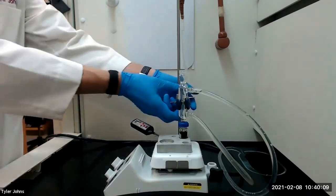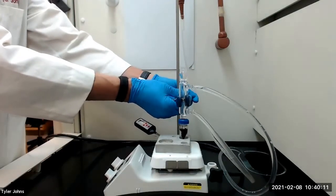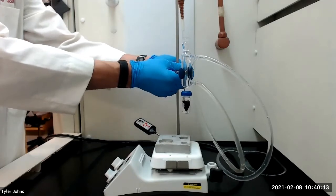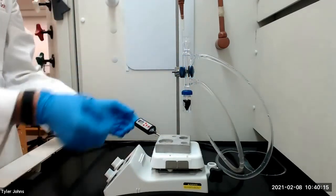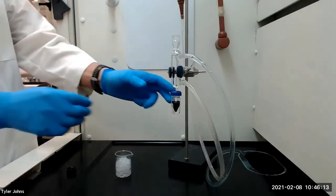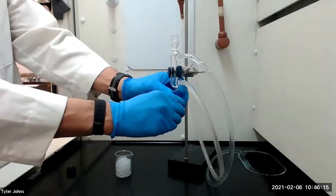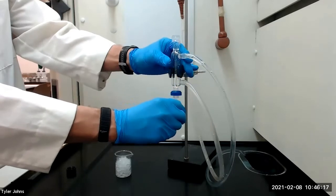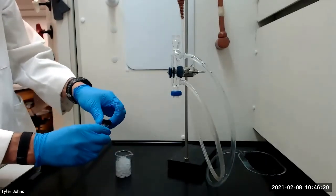After the heating period, we will remove the vial from the aluminum block and allow it to cool to room temperature. After the vial has cooled to room temperature, we will place the vial in an ice bath to complete crystallization.